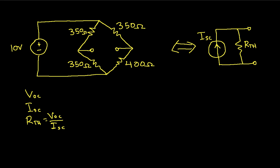So to begin with, we need to find the open circuit voltage. So we are finding the Norton equivalent with respect to these two terminals. So the first thing we need to do is find the open circuit voltage across these two terminals.